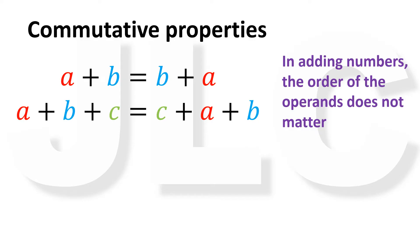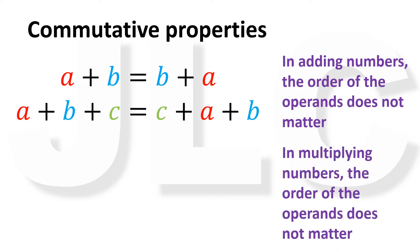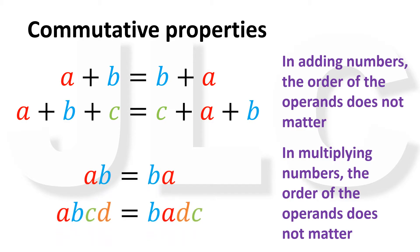Likewise, for multiplication, the order of the operands does not matter. A times B is the same as B times A. A times B times C times T is the same as B times A times T times C. It doesn't matter how we arrange the numbers from left to right.